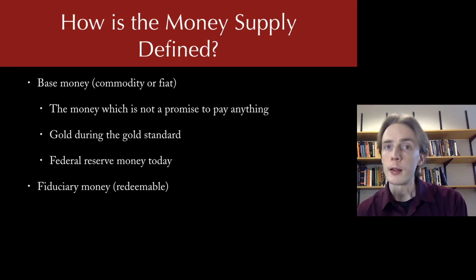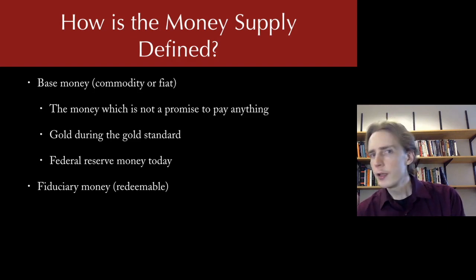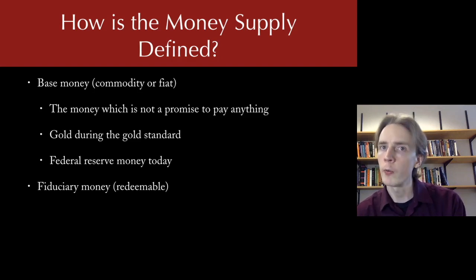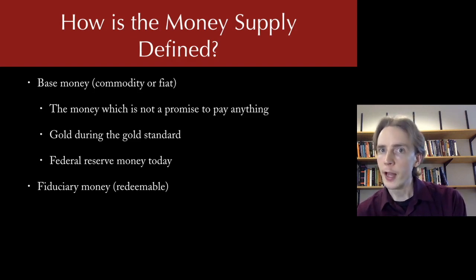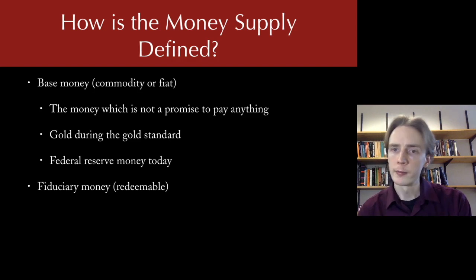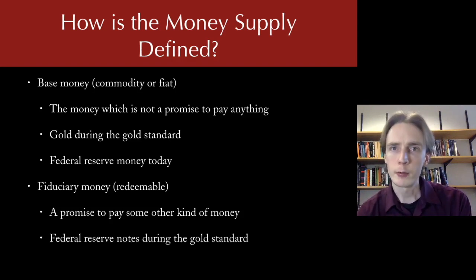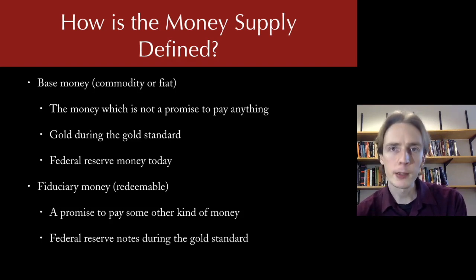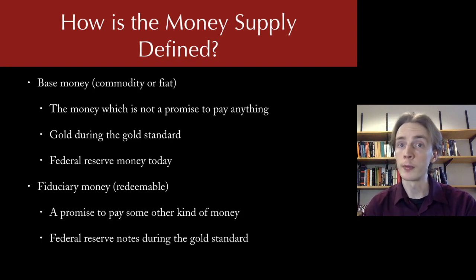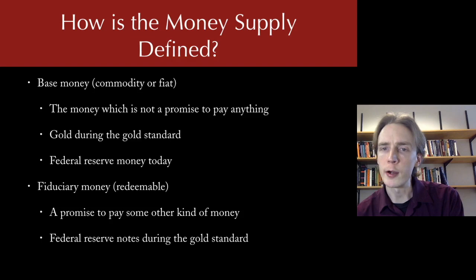The second type of money is fiduciary money, which corresponds to redeemable money. The word 'fiduciary' comes from the Latin for faith — same root as 'semper fidelis,' always faithful. Fiduciary money is a promise to pay, and you have to have faith that promise will be kept. During the gold standard, Federal Reserve notes were fiduciary money: you could walk into the Federal Reserve and say, 'I'd like this amount in gold,' and they would give it to you.